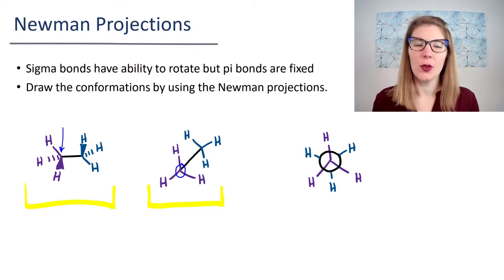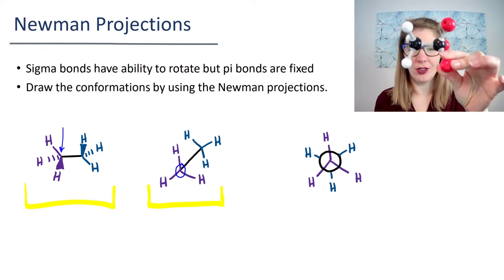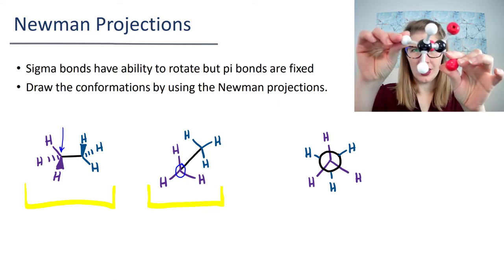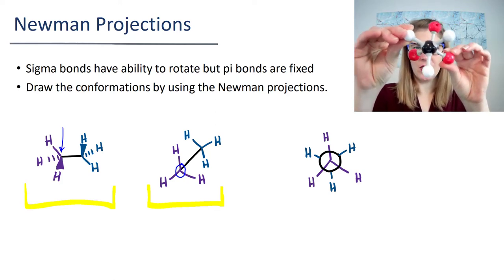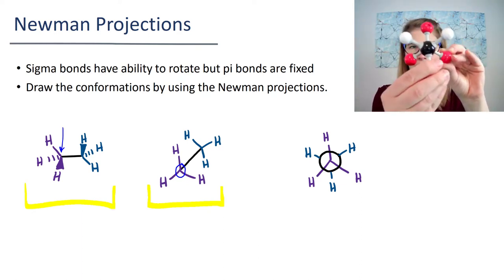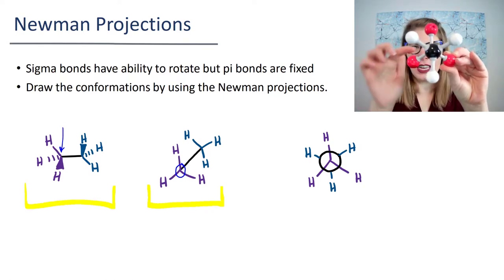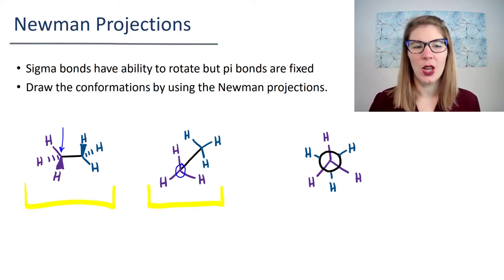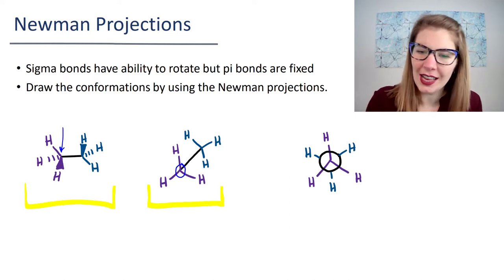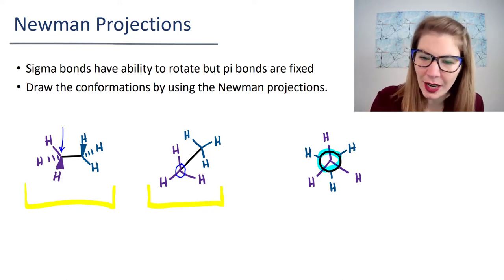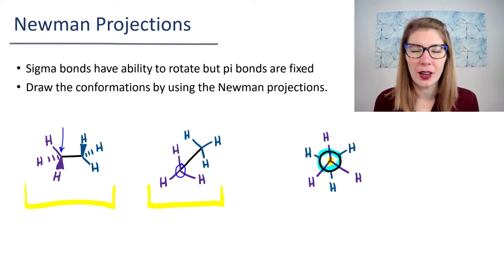Let's do that with our model. With our model, we have our normal projection, and we're going to twist to sawhorse, and then twist so that now the front carbon is right at your eye. Notice how if the front carbon is right at your eye and you're perfectly lined up, you can't see the back carbon anymore. That's why in our Newman projection, we draw the back carbon as just a big circle. The big circle highlighted in blue is the back carbon, and the location highlighted in yellow is your front carbon.